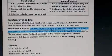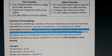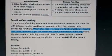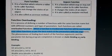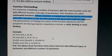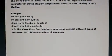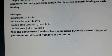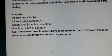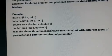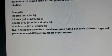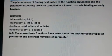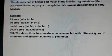The phenomenon of finding the best match of function arguments and the parameter list during program compilation is known as static binding or early binding. For example: int area(int a, int b) takes two integer values; another area function int area(int a, int b, int c) takes three values; another has a double return type with double a and double b; and another is double area(int a, double b). All functions have the same name but different parameter lists and return types.